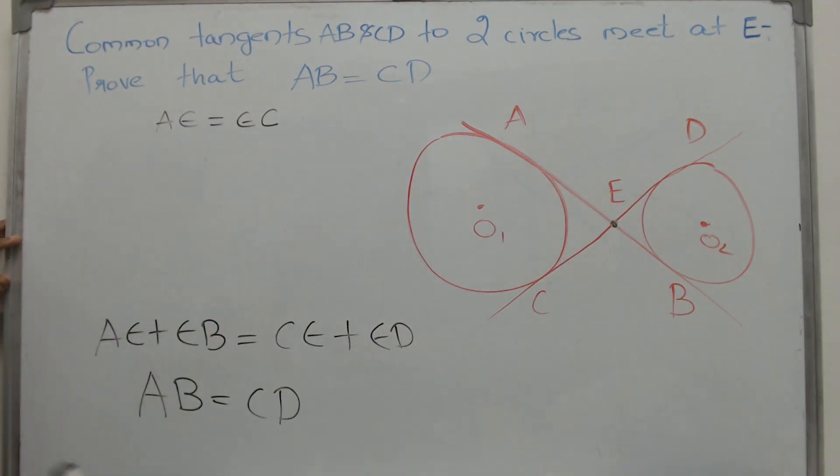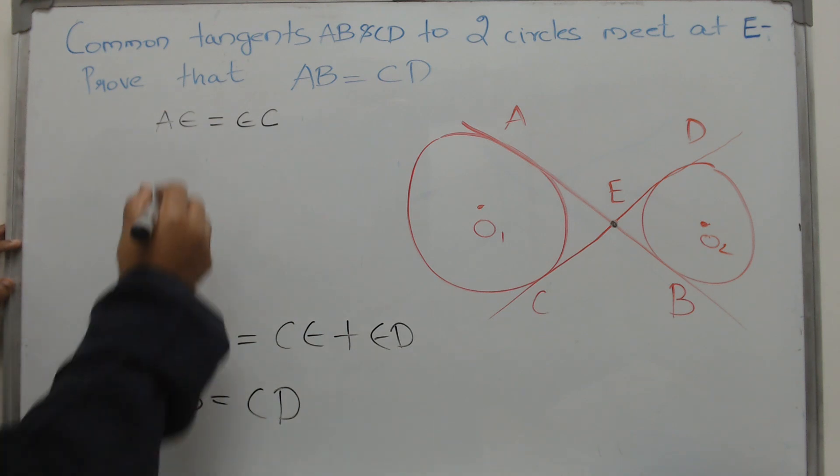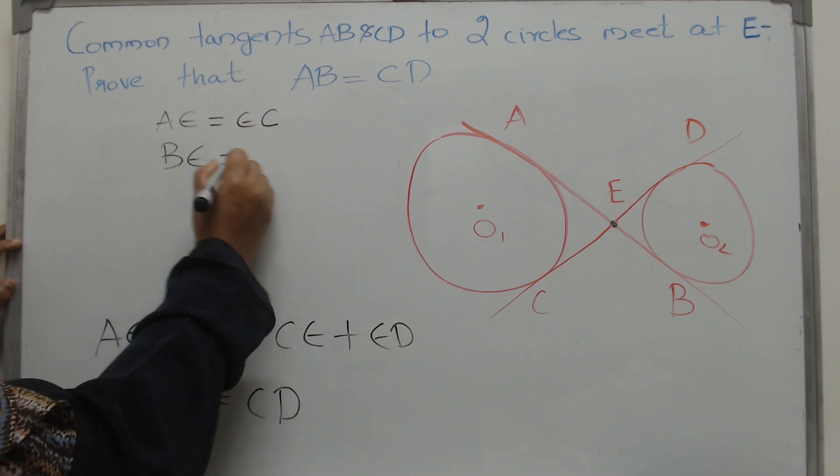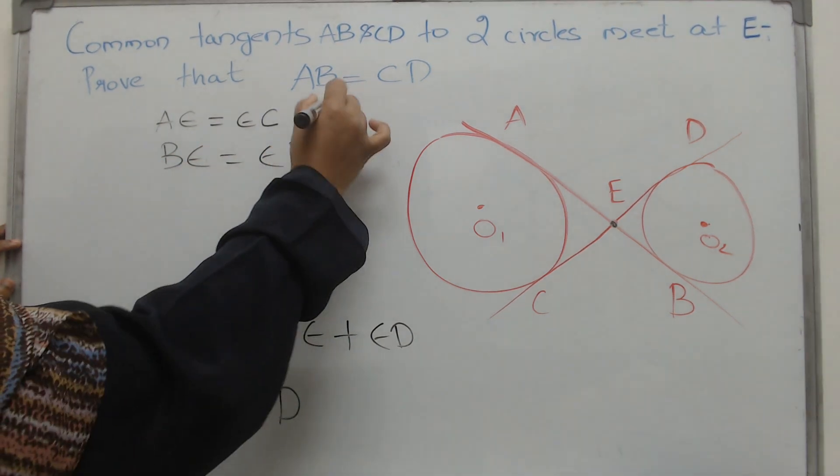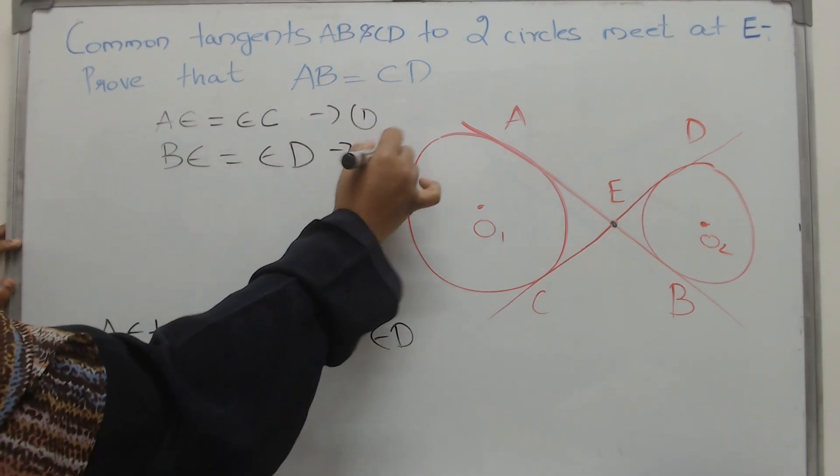From the same external point E, we have two tangents to the same circle which means what? BE is equal to ED. There we have two equations.